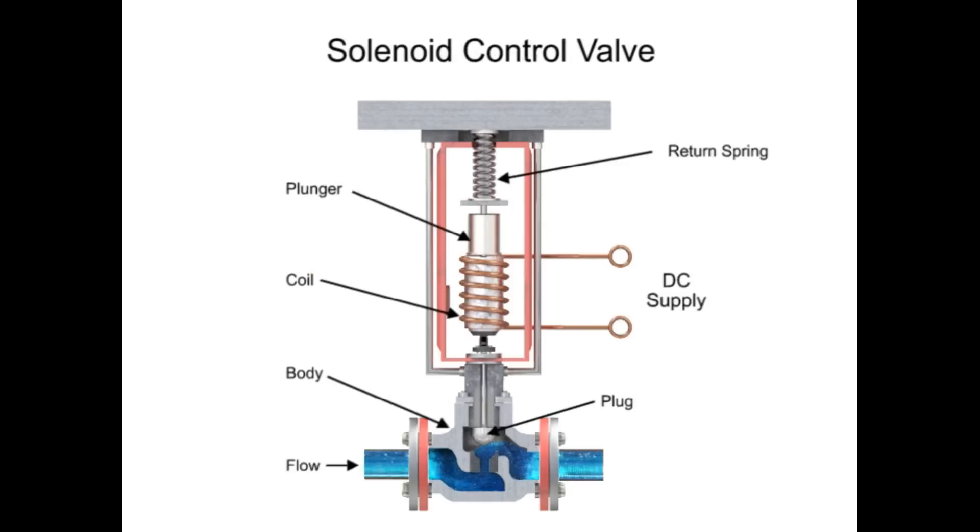For on-off control of the valve, a solenoid is used to actuate the valve to a fully closed or fully open position. Applying current to the coil generates a magnetic field that moves the plunger downward against the return spring. With zero current applied to the coil, the spring pulls the plunger upwards to the fully open position for a normally open state control valve.